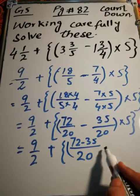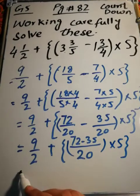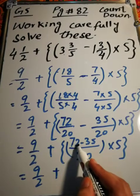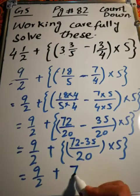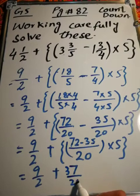9/2 plus, denominator same, 20. 72 minus 35, multiply 5. Then 9/2 plus, taking carry, it becomes 12. 12 minus 5 is 7. What left here? 6. 6 minus 3 is 3. 37/20, multiply 5.